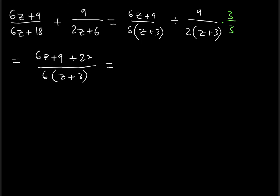Okay, so as a result we can combine the like terms in the numerator, so we will have 6z plus 36 divided by 6 times z plus 3.